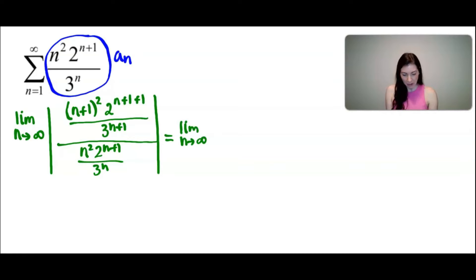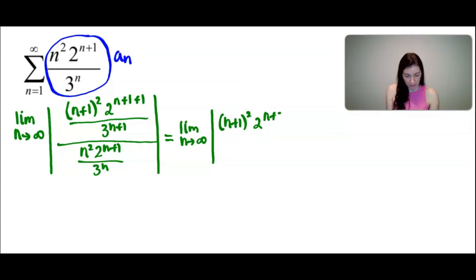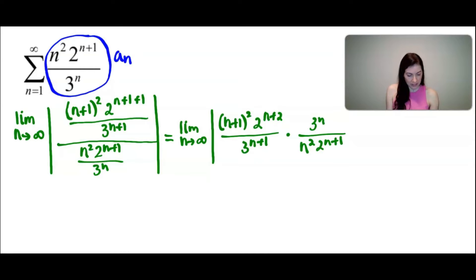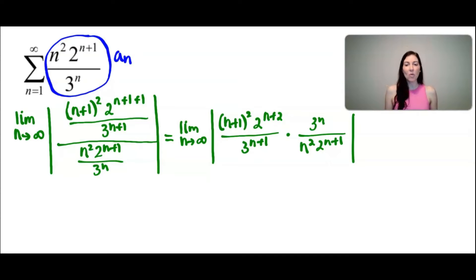From here let's simplify a bit. I'm rewriting the limit as n approaches infinity and keeping the absolute value. I'm going to change this from a division problem to a multiplication problem, multiplying by the reciprocal. So we have the denominator as 3 to the power of n+1, and we multiply by the reciprocal of the denominator. From here we just need to simplify to find the limit as n approaches infinity.